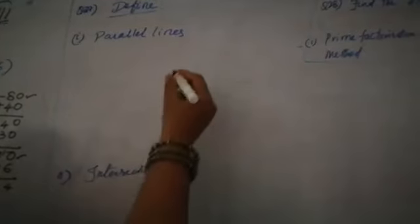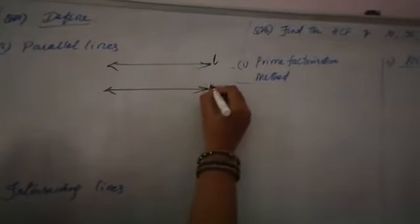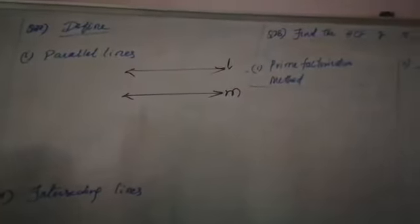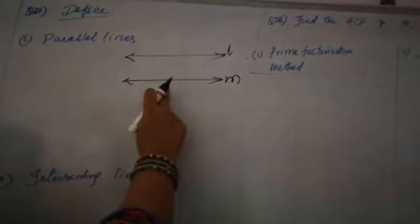Now he is asking question number 27: define parallel lines. What are parallel lines children? The lines which do not intersect each other are called parallel lines. I have already explained this children — lines and angles. Two lines which do not intersect are called parallel lines. I will give the definition in PDF.